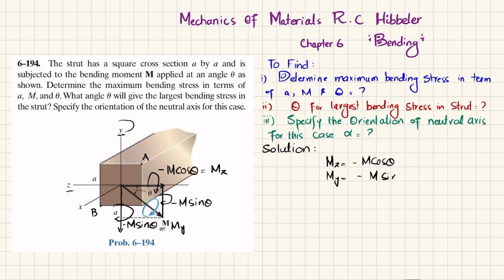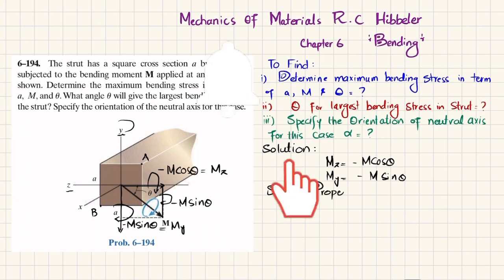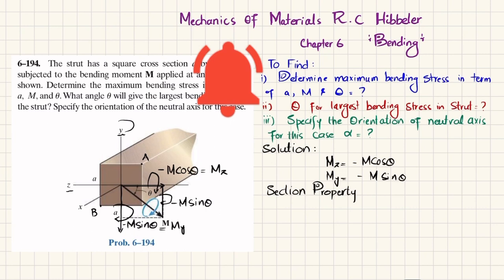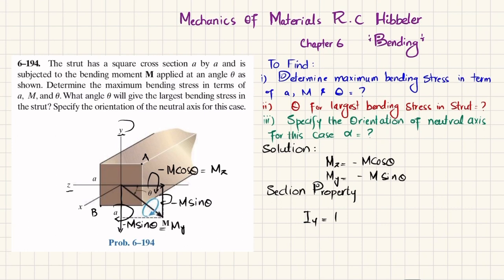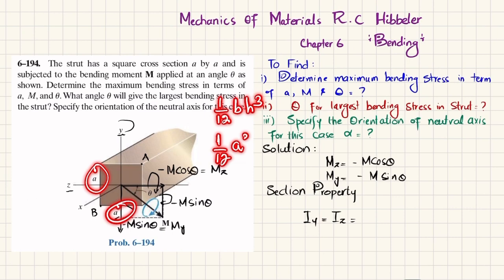Now we find the section properties — the second moment of inertia. Since this is a square strut, Iy = Iz. Using the formula (1/12)bh³ with b = a and h = a, we get I = (1/12)a⁴.